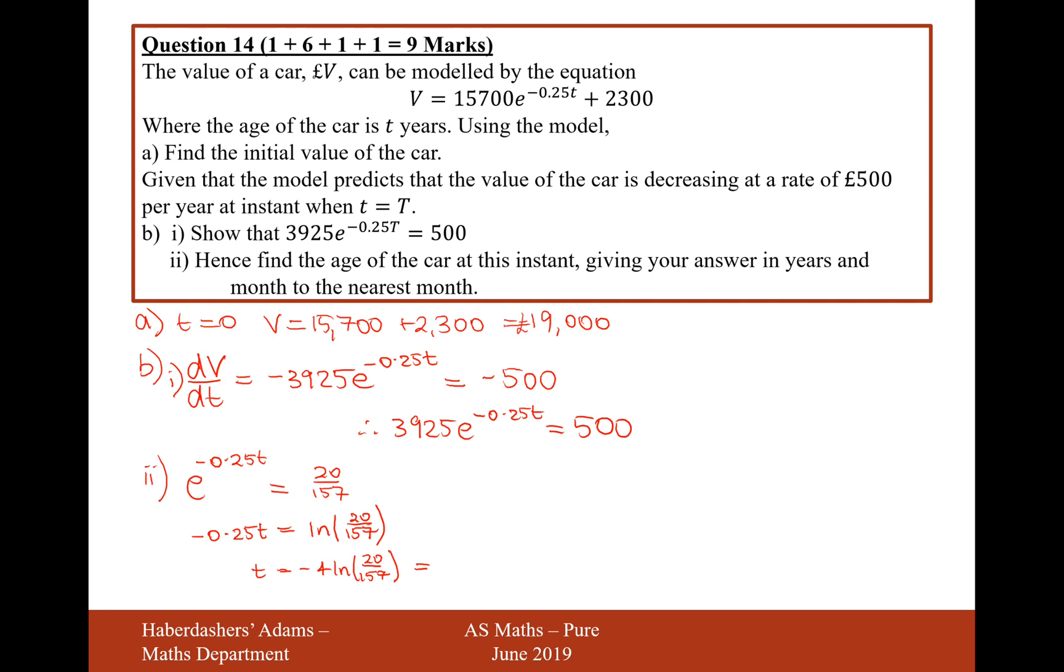Minus 4 ln 20 over 157. So let's now calculate this. It's going to be minus 4 ln 20 over 157, close brackets. And that's going to give us 8.242. So now if we want it in years and months, it's going to be 8 years. And now on the calculator, what I'm going to do is I'm going to take away 8, so just leave me with the decimal bit there and then times it by 12. And that will give me 2.9, so I'm going to say 8 years and 3 months.